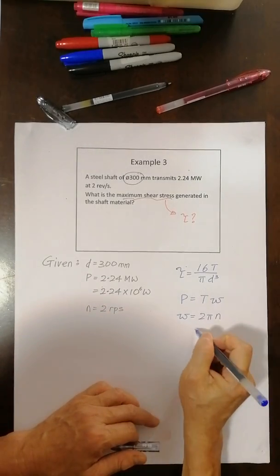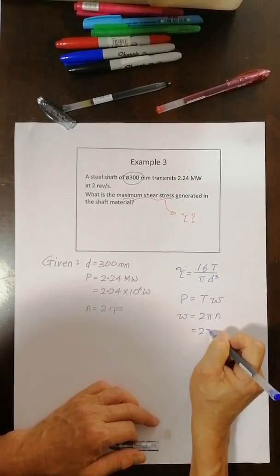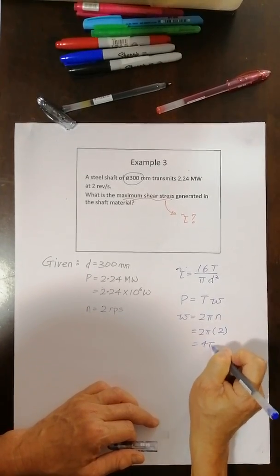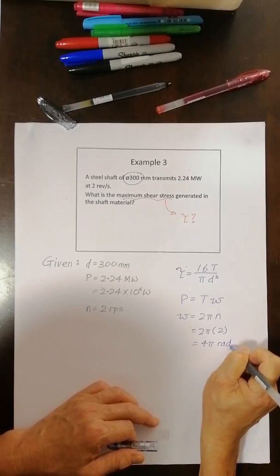So let's get the omega correct first. 2 pi n is 2 so put over here. I will have 4 pi radian per second.